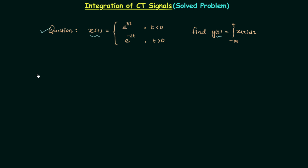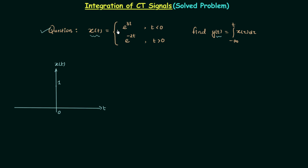The first thing I will do is plot the waveform of signal X(t). It is already defined and using the definition we can have the waveform. When t equals 0, e raised to power 3t will be 1 and e raised to power minus 2t will be 1, so at t=0 the value of signal X(t) is 1. When t is less than 0 we have e raised to power 3t, which means the value is 1 over e^(3t). As t becomes more negative, the denominator increases and X(t) decreases, giving us this waveform shape.